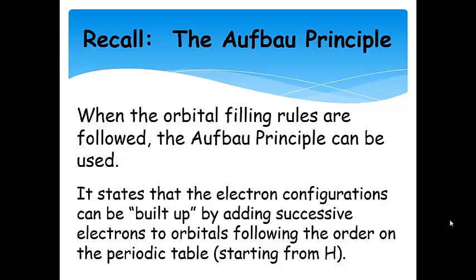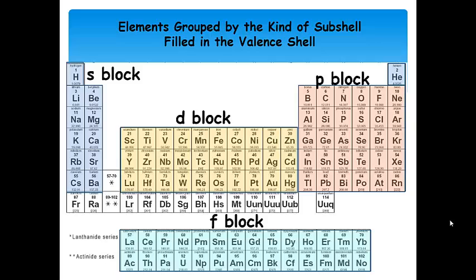The Aufbau principle — which I introduced in the previous presentation — allows you to build up electron configurations by adding successive electrons to orbitals following the order on the periodic table, making it very easy to write configurations for various elements. As a reminder: the s block is where we fill s electrons, the d block is where we fill d electrons, the p block fills p electrons, and the f block fills f electrons. You should keep those in mind.